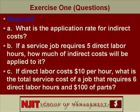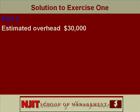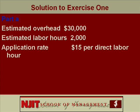Here's the answer. Part A: the estimated overhead at the start of the year is $30,000. They decide to use labor hours to charge overhead. Estimated labor hours is 2,000. By dividing overhead by labor hours, you get what's referred to as the application rate. In this case, they decided it's $15 per labor hour — this means the company would charge $15 overhead for every hour worked by employees on a job.